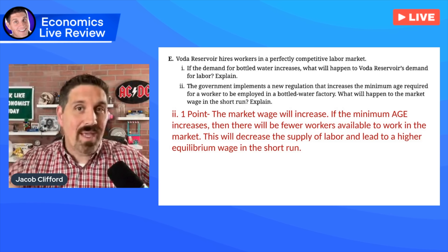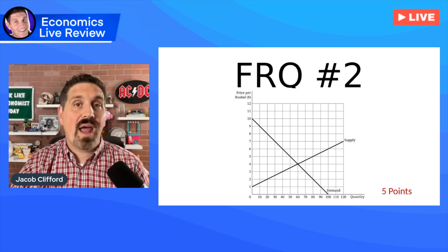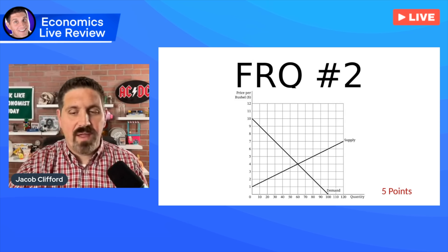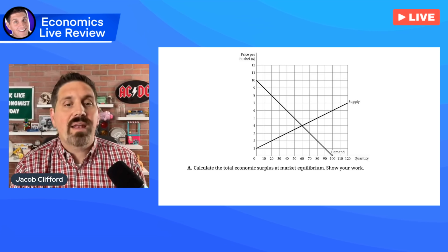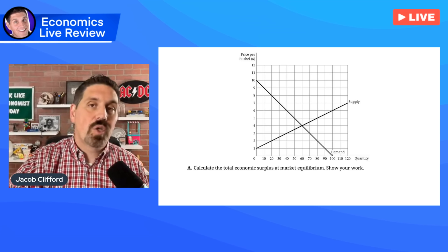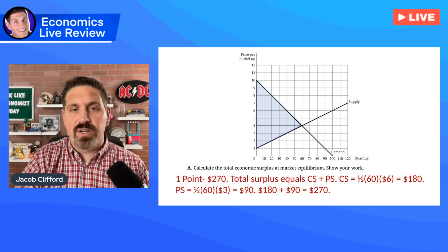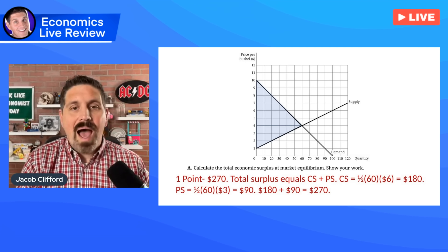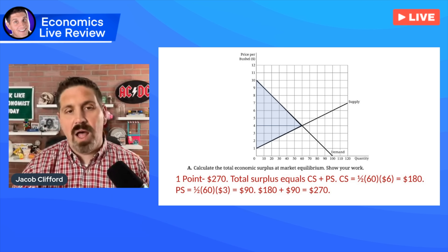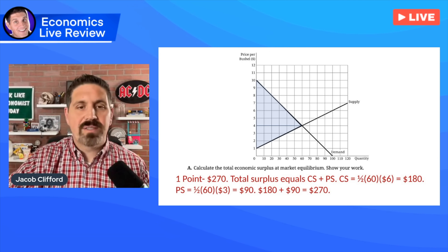Let me know in the comments below how you think you did out of nine. Now, in free response number two, they gave you a supply and demand graph and asked you some questions about price controls and trade. The first question is: calculate the total economic surplus. Economic surplus is consumer plus producer surplus. It was $270. You had to show your work — if you don't show your work, you don't get the point. It's one half base times height for the triangle. Consumer surplus was $180, producer surplus was $90, and when you add them together it was $270.